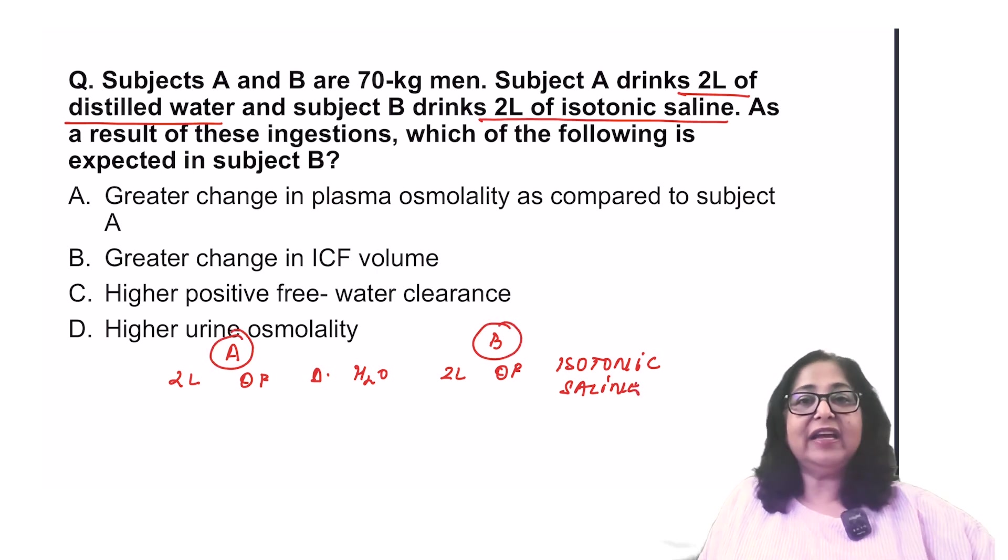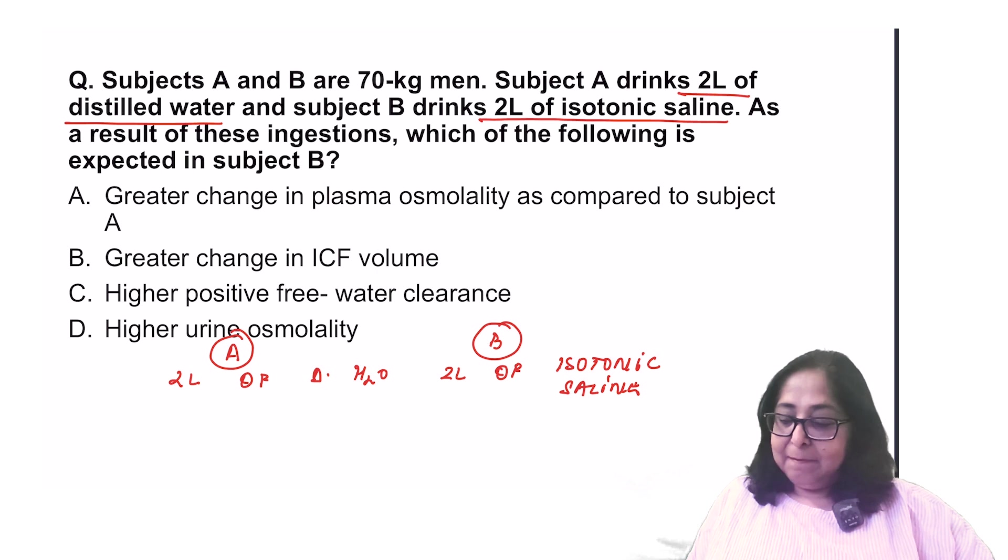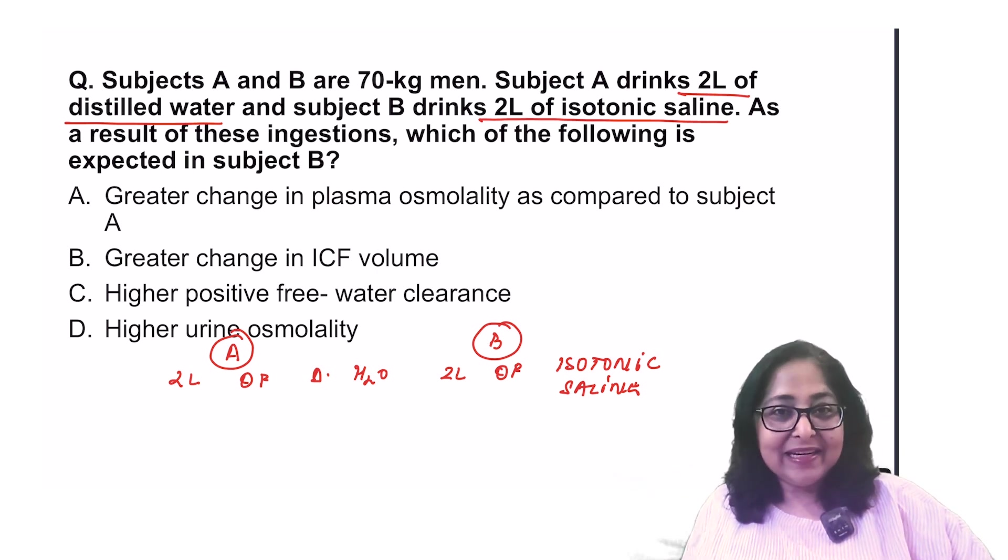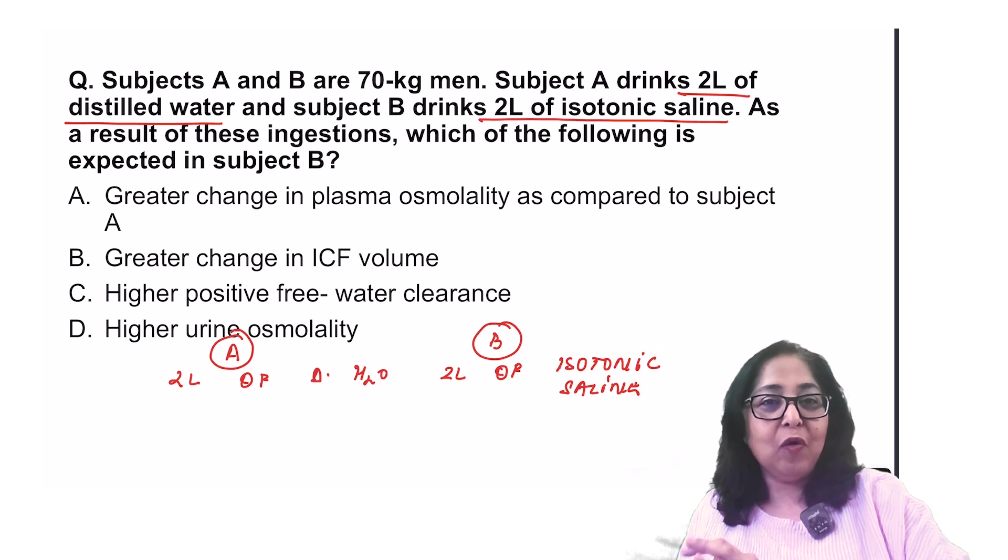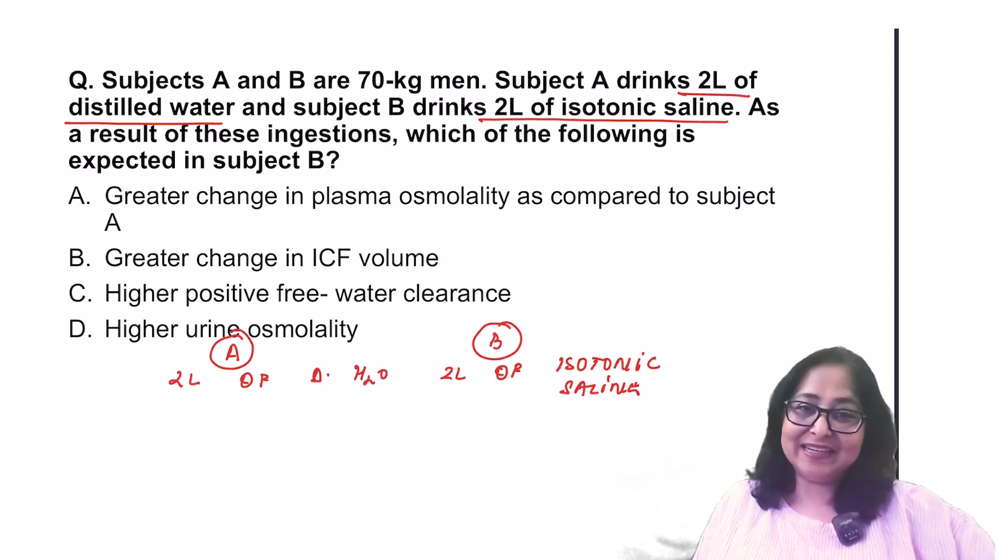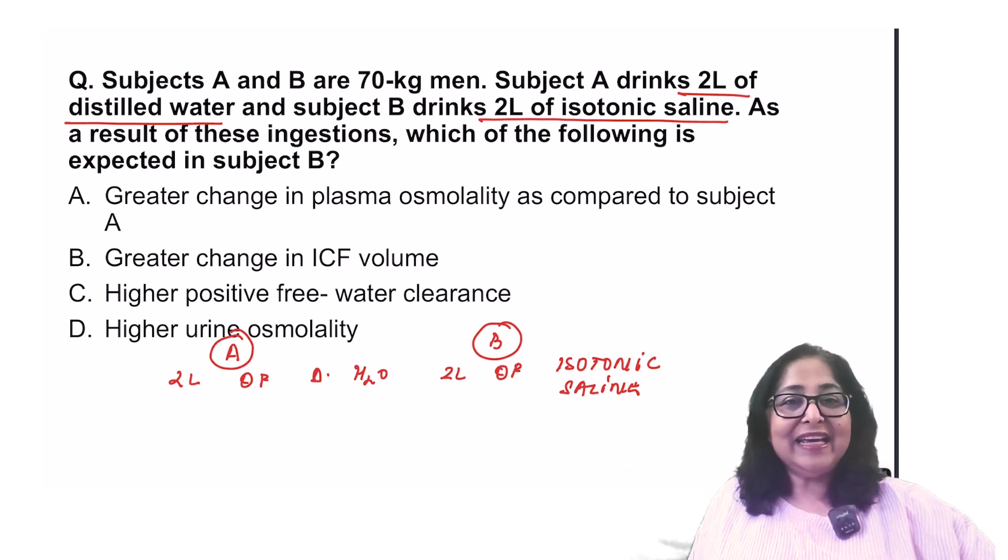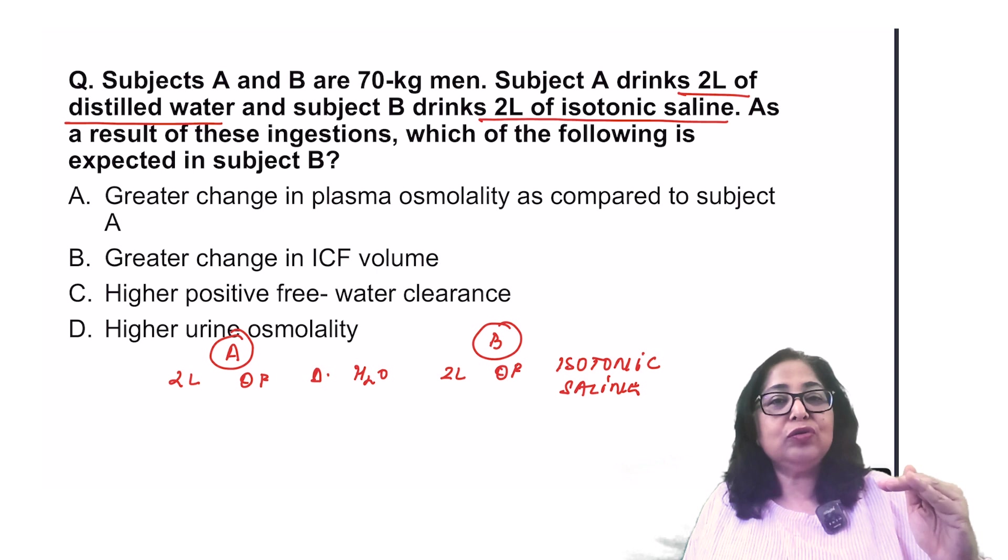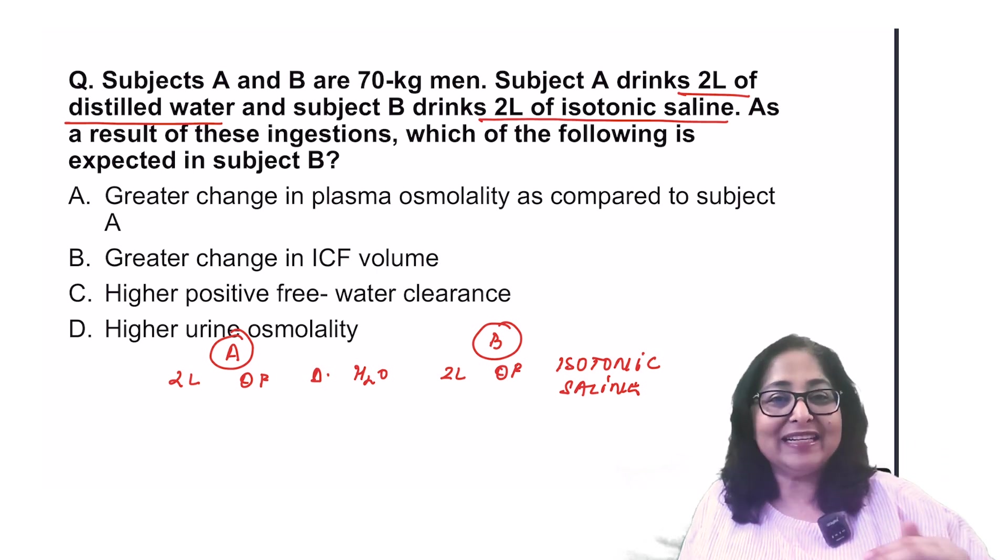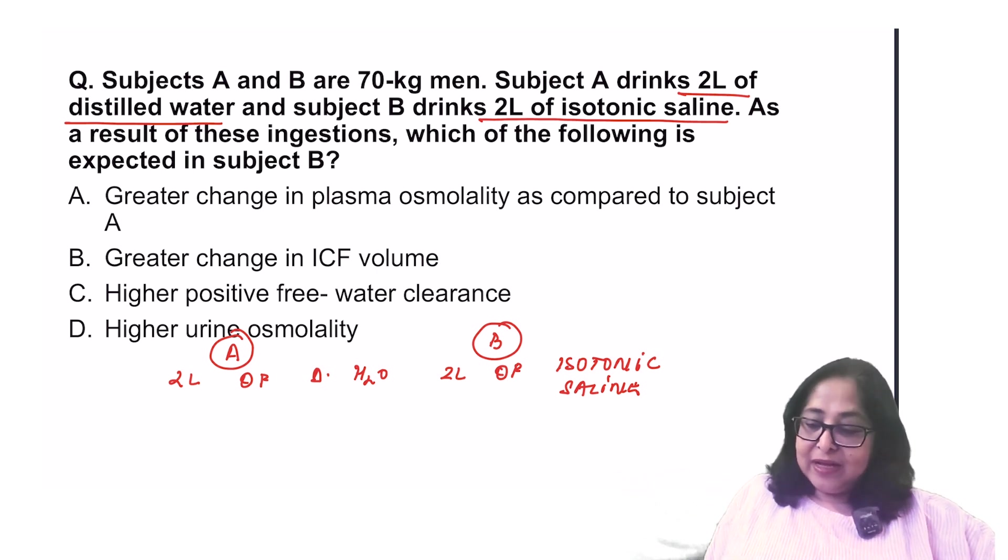By drinking 2 liters of isotonic saline, subject B has expanded his ECF volume without any change in osmolality. But by drinking 2 liters of distilled water, subject A has not only expanded his ECF volume but has also reduced the ECF osmolality. It has made the ECF dilute. So, let's have a look at what are the changes which are going to happen.